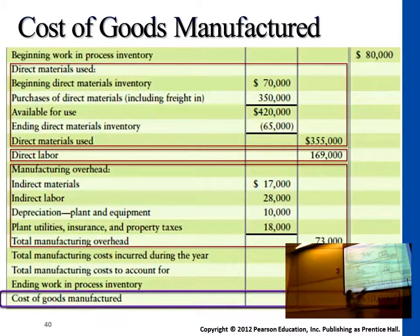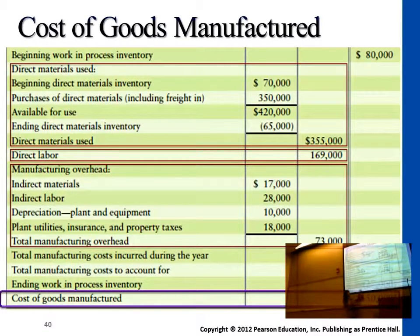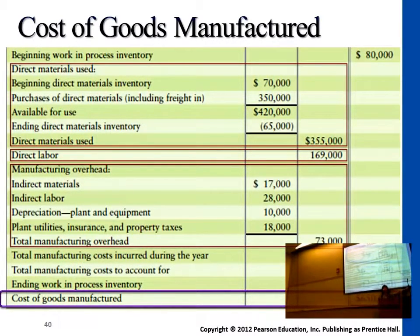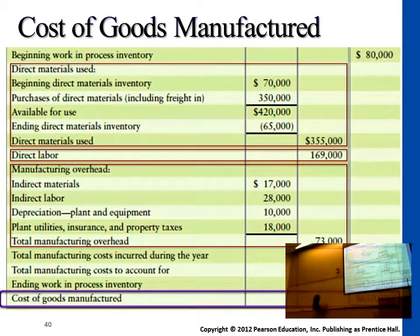We compare $597,000 against ending work-in-process inventory. Just like last year, this year we also have some inventory that is not yet fully done — not ready for the customer yet. We subtract that ending work-in-process of $27,000 in order to get the finished goods cost. Cost of goods manufactured means the finished goods costs incurred in this period — costs of inventory now ready for the customer — giving us $650,000.